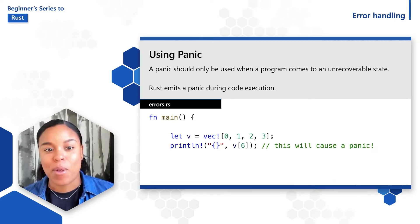Take, for example, this piece of code. Here we have a vector with items 0, 1, 2, and 3, and then we try to print out the value of V at index 6. This will cause a panic because there is no V of index 6. The maximum index that we have in this vector is 3.